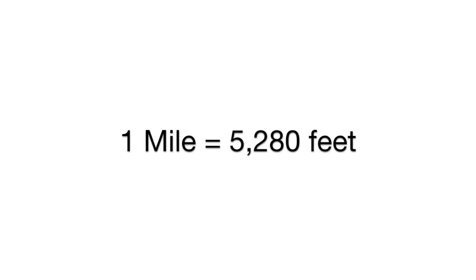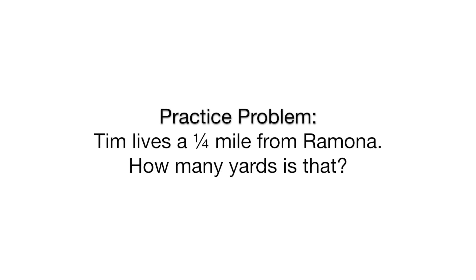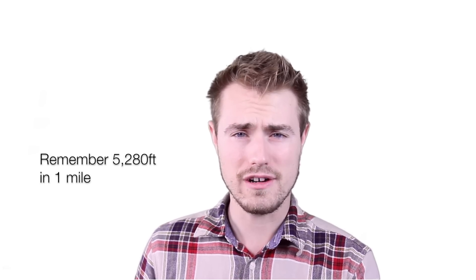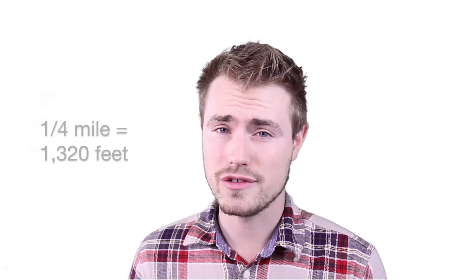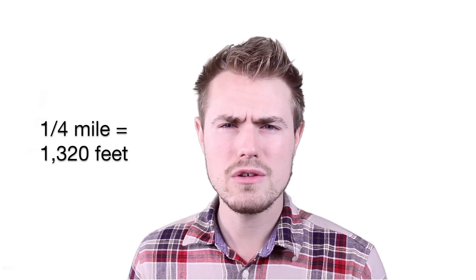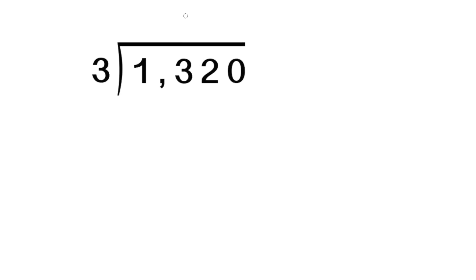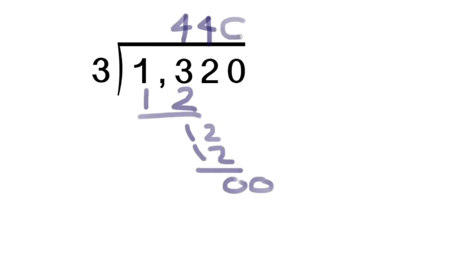Now for one last piece of information before you do an on-your-own problem: there are 5,280 feet in one mile. Tim lives one quarter mile from Ramona — how many yards is that? To find our answer, we know we want to find how many feet are in a quarter of a mile, so we divide 5,280 by 4. That gives us 1,320 feet. Now we want the answer in yards, so we divide 1,320 by 3, which gives us 440 yards.